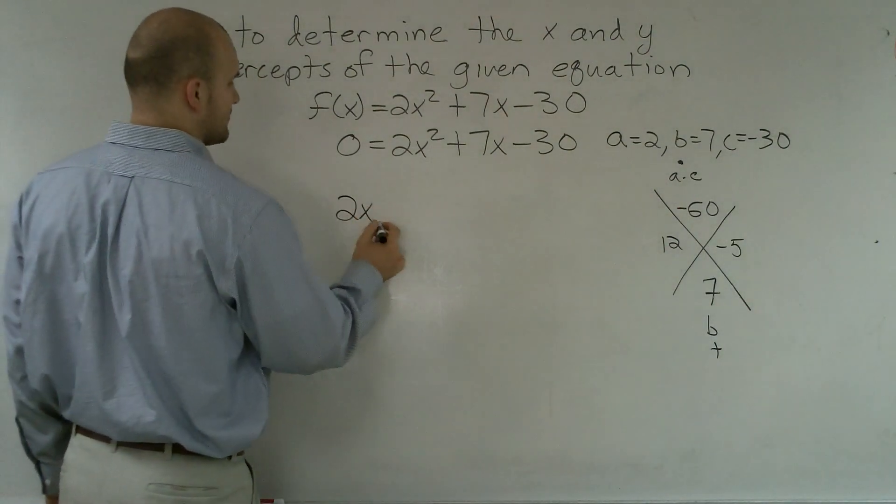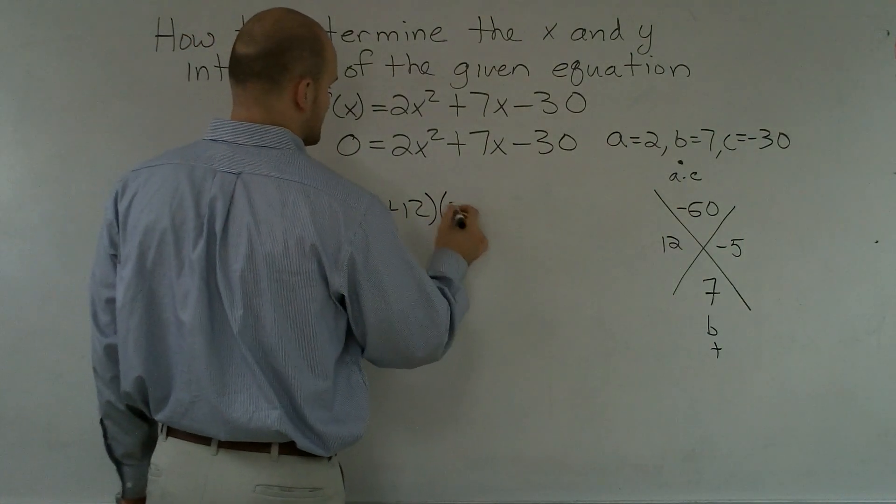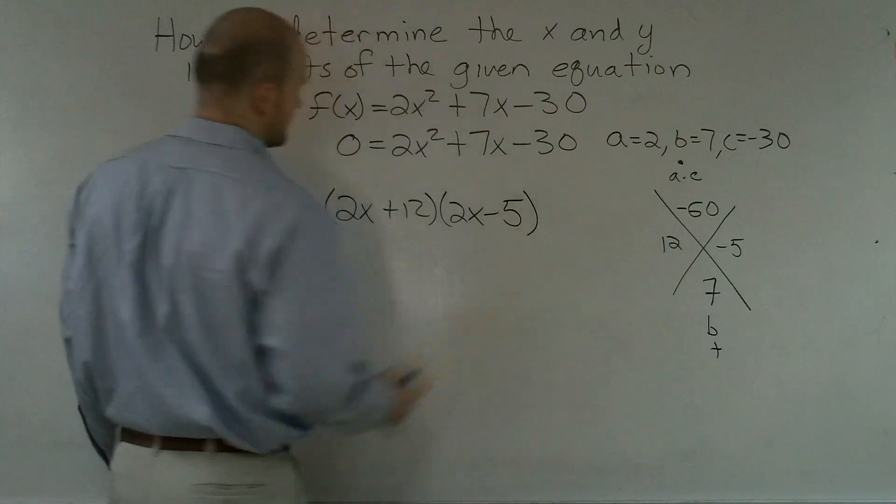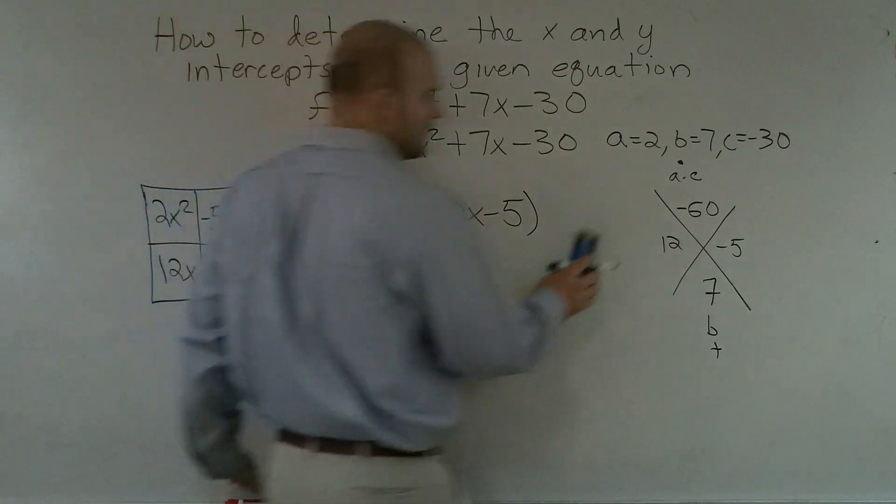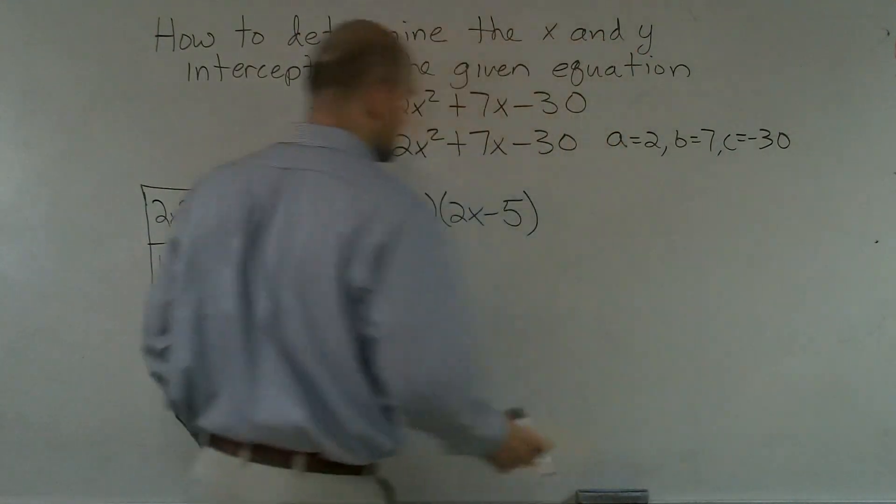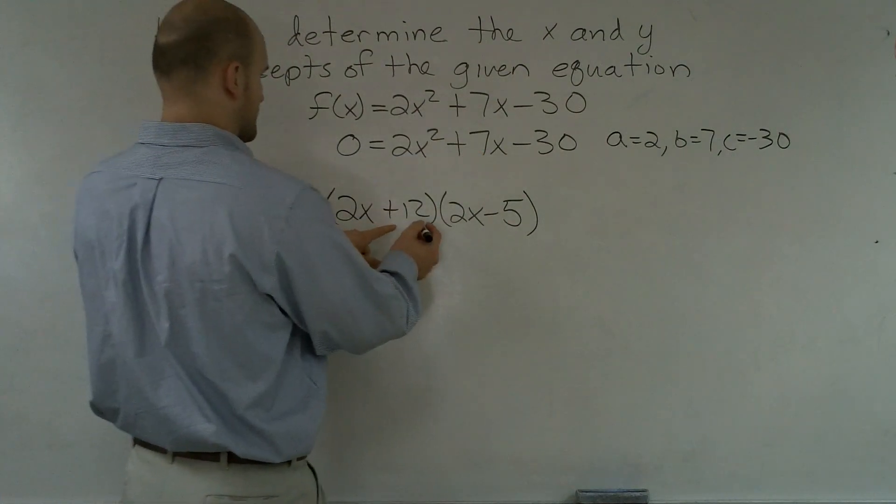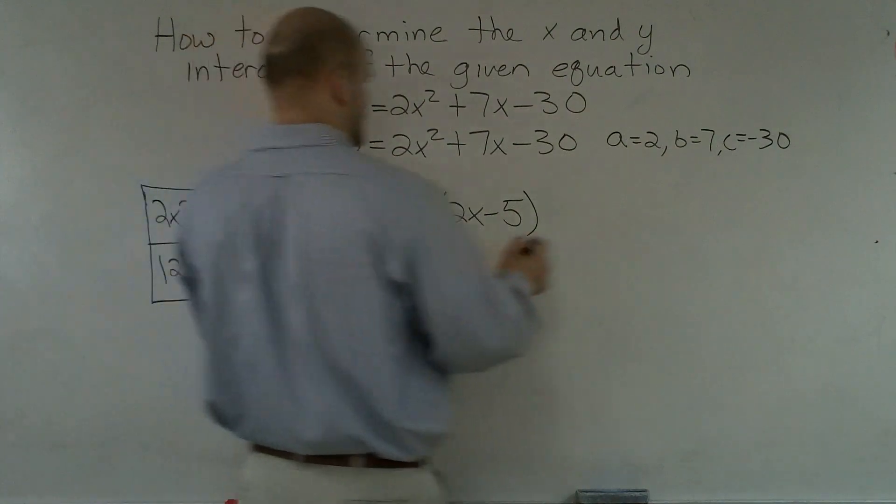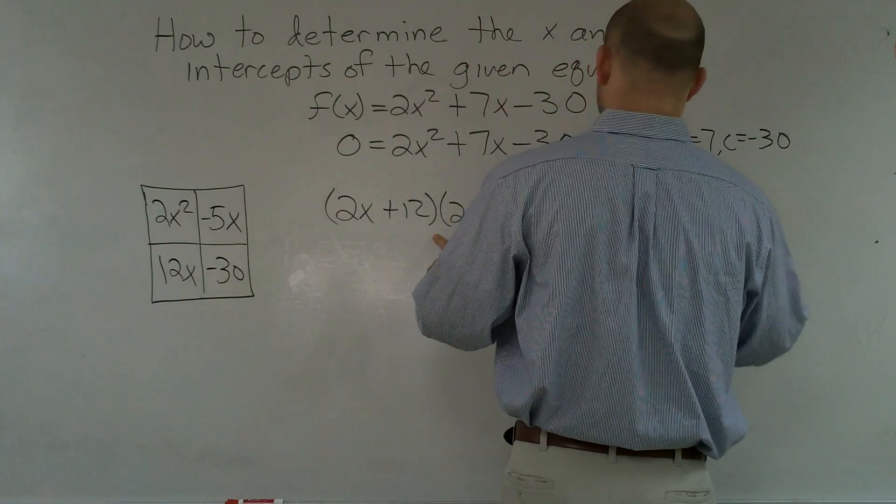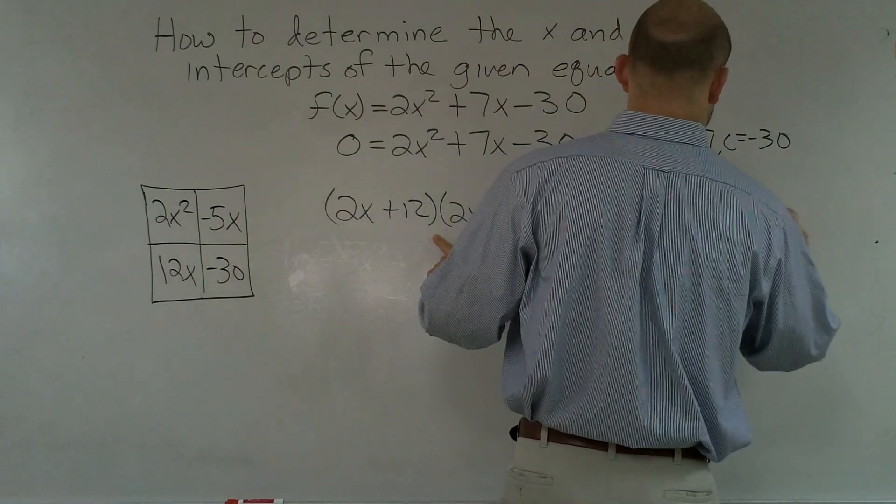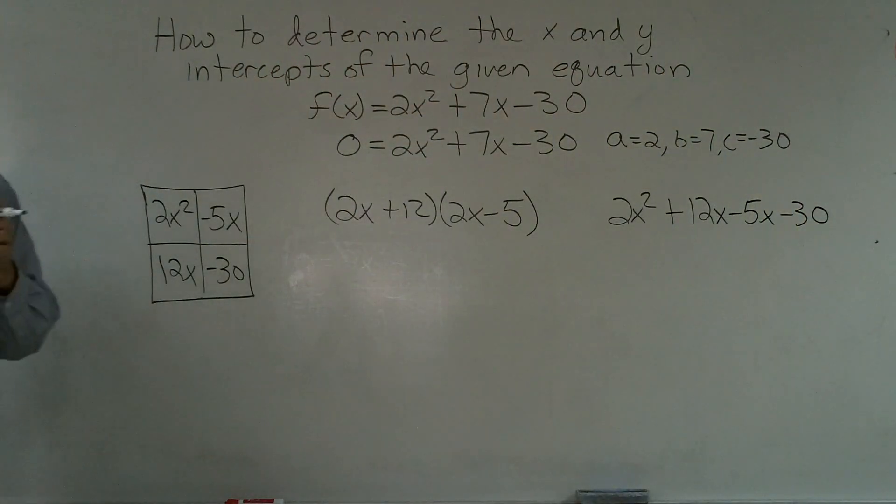The next way we can do this is we can take our leading term and create our two binomials. So you can do 2x plus 12 times 2x minus 5. I know that does not equal 2x squared because 2x times 2x is 4x squared, but just wait for it. And I'm going to erase this. And the last one we can do is we can rewrite this, but instead of writing 7x, we could write 12x plus 2x. So we could write 2x squared plus 12x minus 5x minus 30. And hopefully, this all shows up in the video.